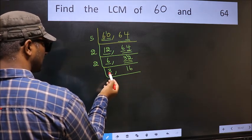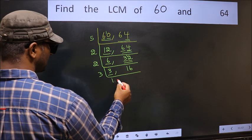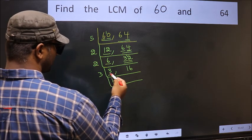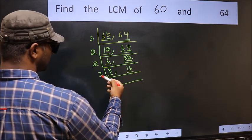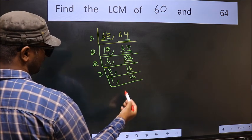Now here we have 3. 3 is a prime number, so 3 ones are 3. The other number is 16 — 16 is not divisible by 3, so you write it down as it is.